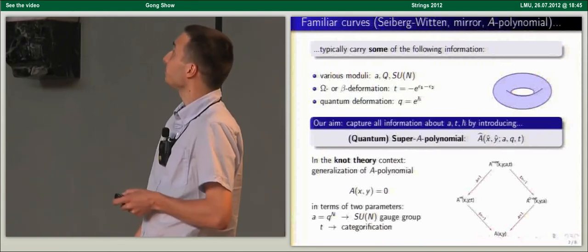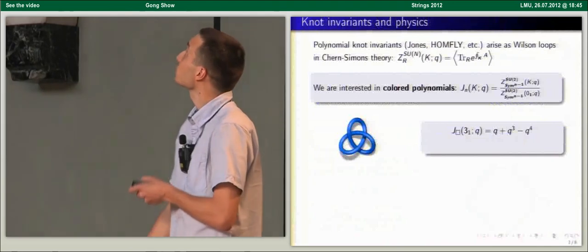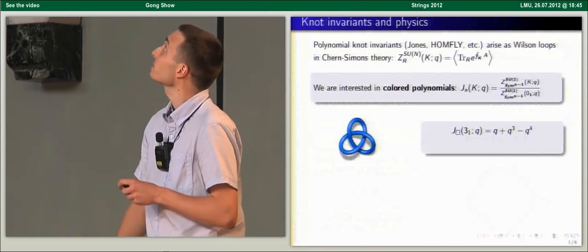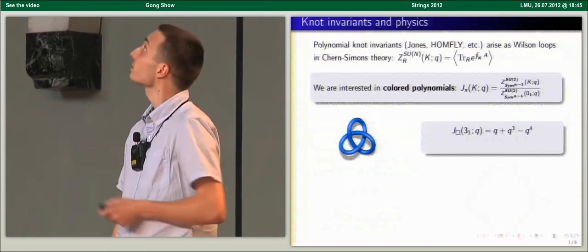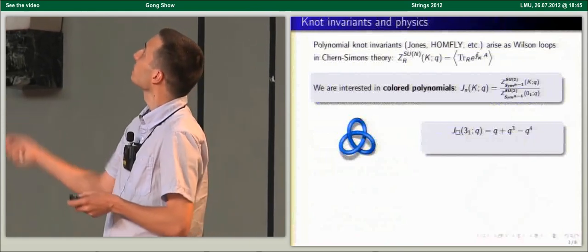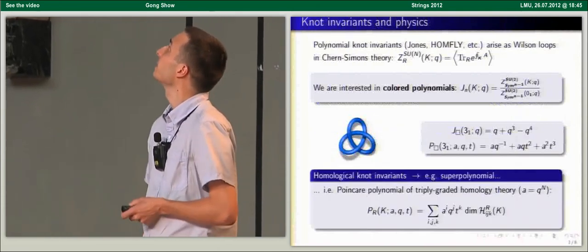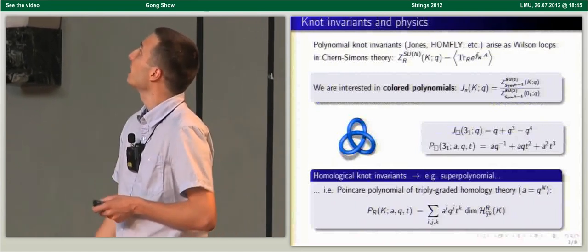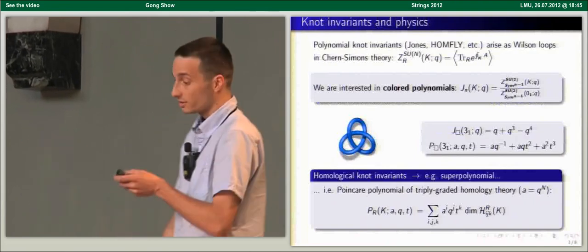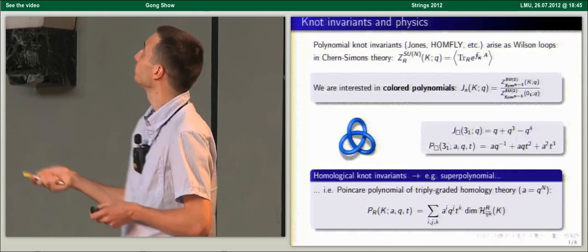In the context of knot theory, this object generalizes the ordinary A polynomial by introducing two deformations: the first, denoted by A, related to considering Casimir and gauge group Chern-Simons theory; and the parameter T related to categorification. Various knot polynomial invariants — such as Jones polynomial or HOMFLY — arise as Wilson loops in Chern-Simons theory. Colored polynomials are labeled by symmetric representations, and one can generalize by introducing dependence on A by considering Casimir and gauge group, and then by considering homological knot invariants and introducing parameter T. Such an object is called a superpolynomial.